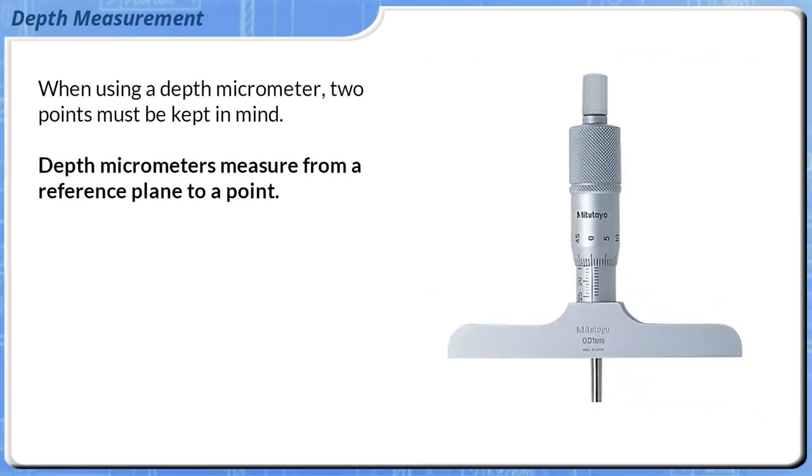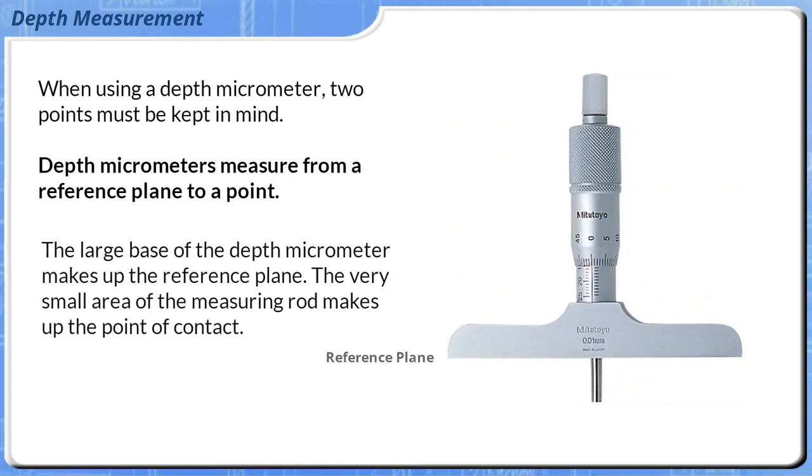When using a depth micrometer, two points must be kept in mind. Depth micrometers measure from a reference plane to a point. The large base of the depth micrometer makes up the reference plane. The very small area of the measuring rod makes up the point of contact.